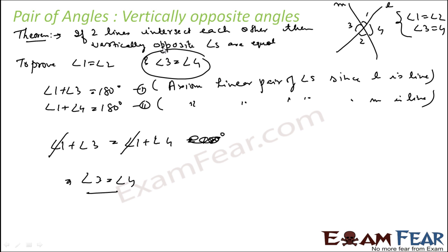This is what we have proved. Similarly, we can prove that angle 1 is equal to angle 2. We are not asking you to measure with a protractor — we are using the axiom of linear pair of angles to prove this. This is why it is a theorem, not an axiom. The linear pair angle axiom was established by observation, while vertically opposite angles are proved using that axiom.